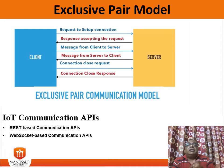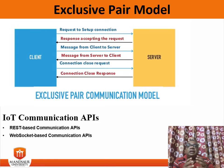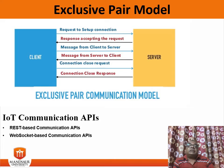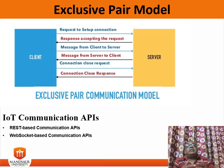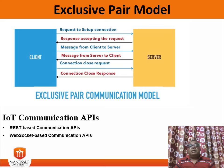The next is the exclusive pair model. This model is a bi-directional full duplex communication model that uses a persistent connection between the client and server. The connection is set up and remains open until the client sends a request to close it. Because it is a full duplex bi-directional communication model, the client and server can send messages to each other after connection setup. The exclusive pair is a stateful communication model and the server is aware of all open connections.